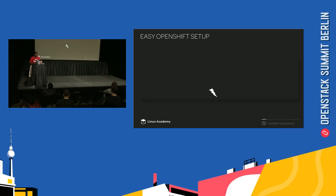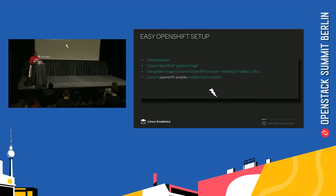How easy is it to set up OpenShift? You create your Bastion host in your OpenStack environment — that can either be a Nova VM or Ironic Bare Metal. Then you create your OpenShift golden image to be used for your infra nodes and hosting nodes. Use that golden image to launch your OpenShift cluster — your masters, your nodes, your infras, however many you want. From your Bastion, you run OpenShift Ansible, and then you profit — you've got an OpenShift cluster on OpenStack. The entire process can take anywhere from 5 to 15 minutes depending on system resources. Head over to the Red Hat booth after this and I will show a full demo launching an OpenShift 3.9 cluster on OpenStack brought to us by Packstack.